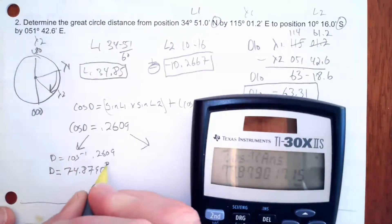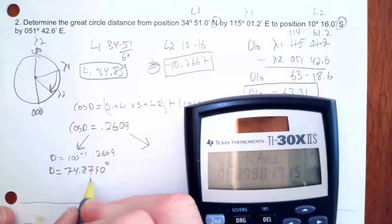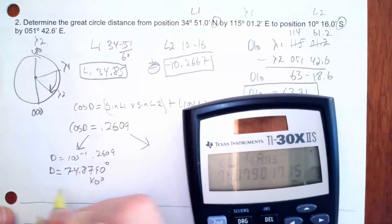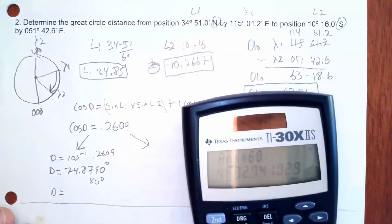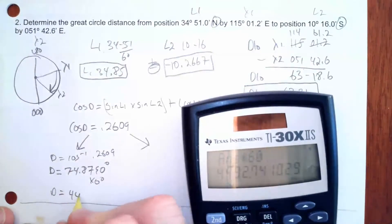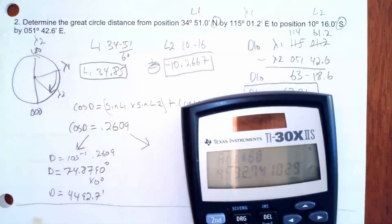That's in degrees, but when I say distance I want it in nautical miles. So I multiply by 60: 74.8790 × 60 = 4,492.7 nautical miles. That is the great circle sailing distance.